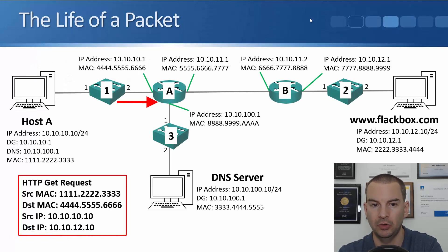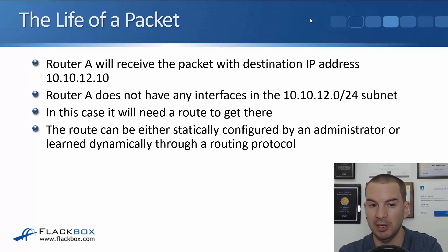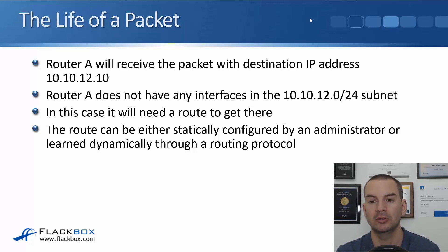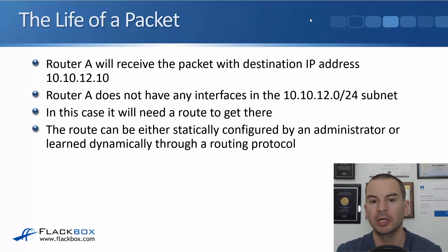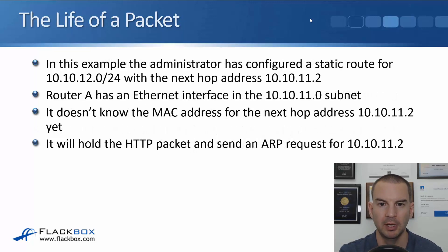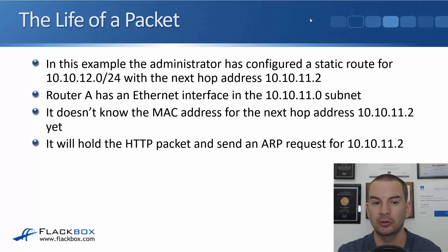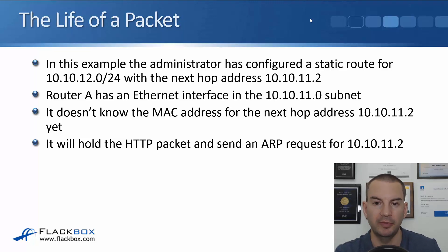The packet will come into Router A. It sees that the destination IP address is 10.10.12.10, and Router A does not have any interfaces in the 10.10.12.0/24 subnet, so it's going to need a route to get there. The route can be either statically configured by an administrator or learned dynamically through a routing protocol. For our example, the administrator has already configured a static route for 10.10.12.0/24 with the next hop address of 10.10.11.2.